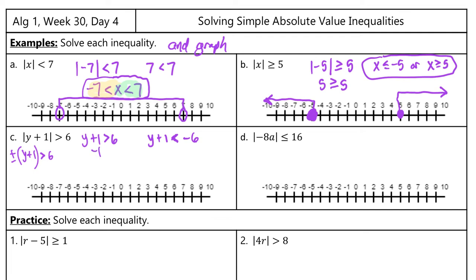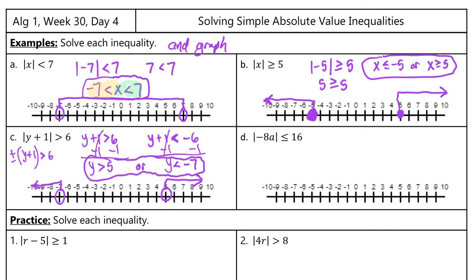Subtracting 1 from the first equation gives y is greater than 5. Subtracting 1 from the second gives y is less than negative 7. When you graph these, y greater than 5 is an open circle on 5 pointing to the right, and y less than negative 7 is an open circle on negative 7 with shading to the left. So this is an or. If the shading were in the middle, that's when it's an and — this is an or.